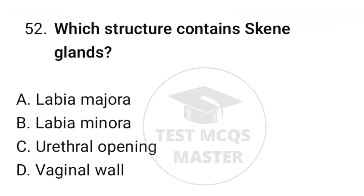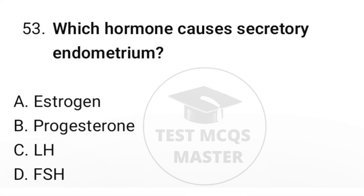Question number fifty-two: which structure contains sebaceous glands? Question number fifty-three: which hormone causes secretory endometrium? The correct option is B, progesterone.